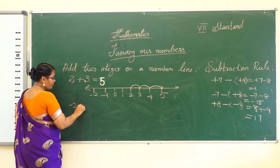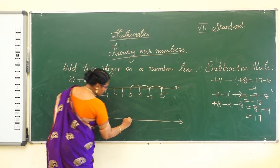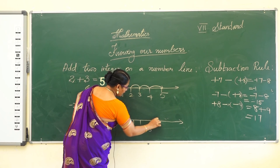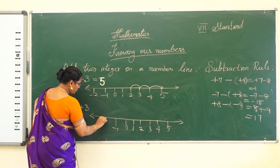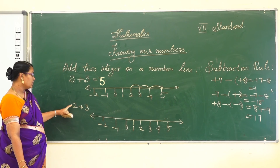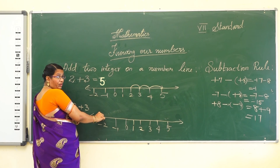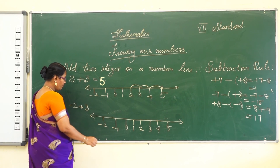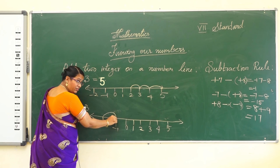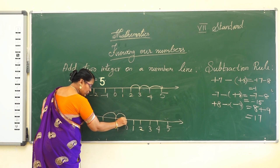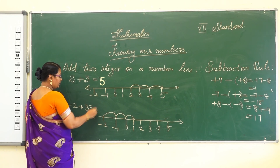For -2 + 3: draw the number line with 0, 1, 2, 3, 4, 5 and -1, -2. Start from -2, then move 3 steps to the right — 1, 2, 3. So what is the value of -2 + 3? It equals 1. I hope you all understand the concept of adding two integers on a number line.